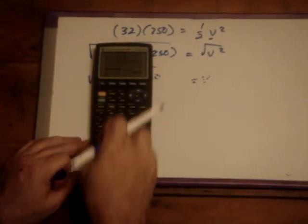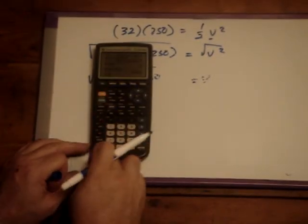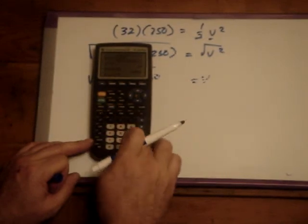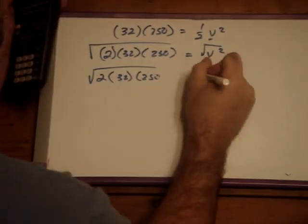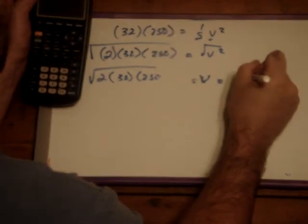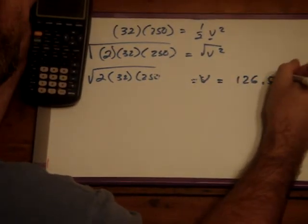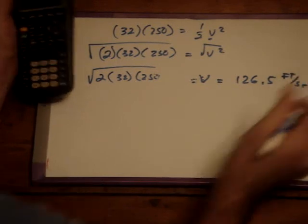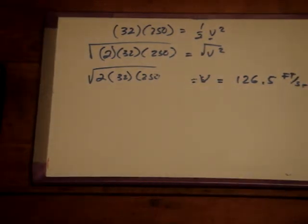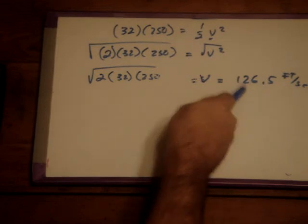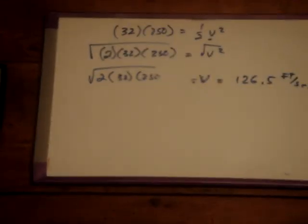So, the velocity then is 126.5, and that is in feet per second. So, that is the speed at which the rider with no loss of energy to friction should reach based on a climb of the hill that's 250 feet high.